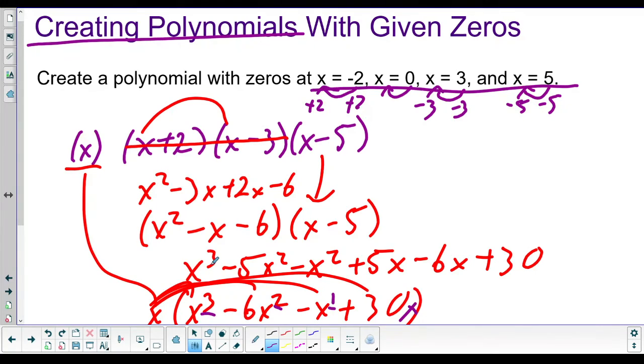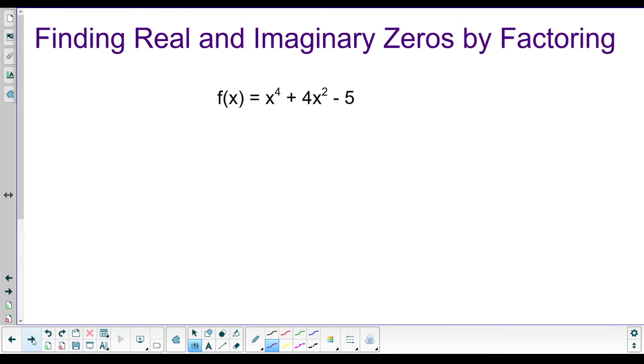So now we're going to clean this one up. So bring down our x cubed. Negative 5x squared minus x squared is negative 6x squared. 5x minus 6x is negative x plus 30. And we still haven't used this x. So we're going to bring it down. And we're just going to distribute it in. And all that does is it increases the exponents by one number. So this is going to be x to the fourth minus 6x cubed minus x squared plus 30x. And this thing, if you graph it, will cross the x-axis at these spots.